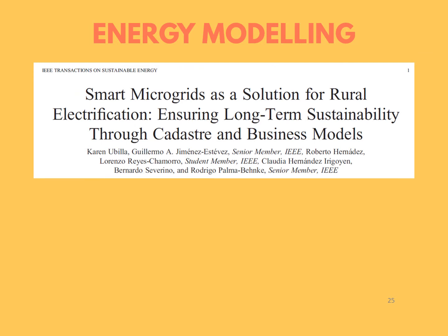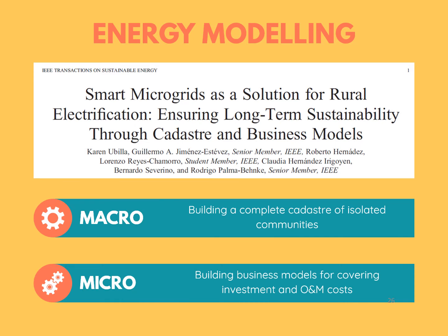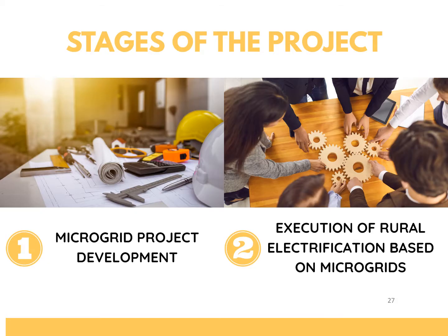This concept of microgrid was used as a solution for rural electrification in this research study. A methodology was proposed to define the criteria to identify communities fit for the project. A proposal was made for promotion, management, and execution of projects at the macro and micro level. Macro included building up a complete category of isolated communities, while the micro level focused on business models to cover the costs. We'll discuss the energy modeling project by dividing it into two stages: first, the development of the microgrid project, which shows a five-step methodology ensuring solutions will be suitable for the local reality of each community; and second, the development of a rural electrification plan based on the developed microgrids.